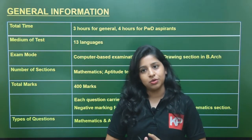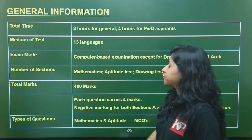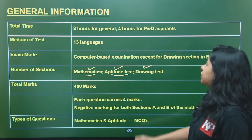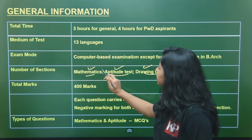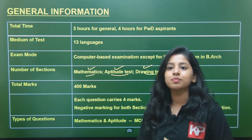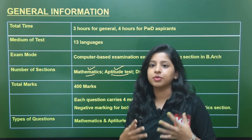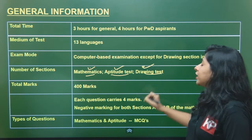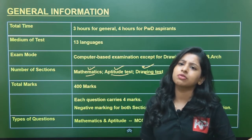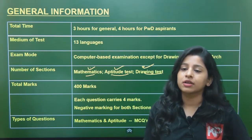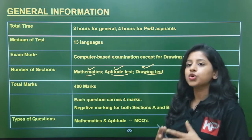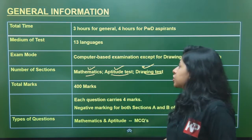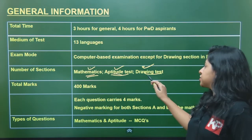There are three sections: Mathematics, Aptitude, and Drawing Test. Mathematics and Aptitude are computer-based with MCQ questions answered online, whereas the Drawing Test is pen-and-paper based. For the drawing test, you might be asked to draw a scene of a local market area or a rural village area. You take your own stationery, and you sketch it out on paper.